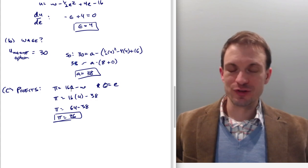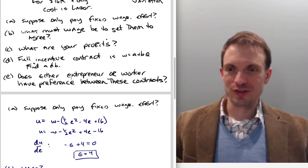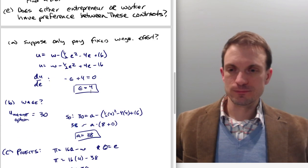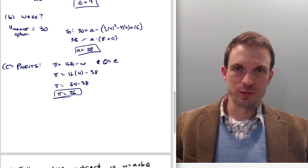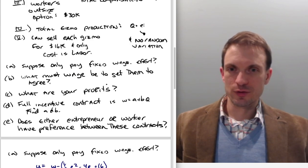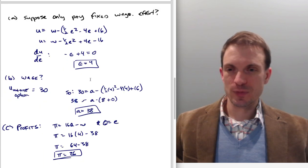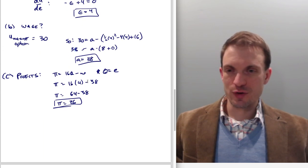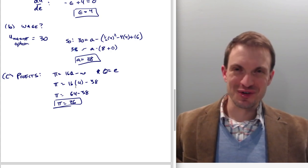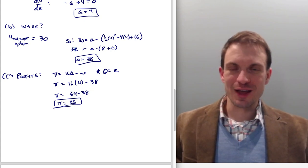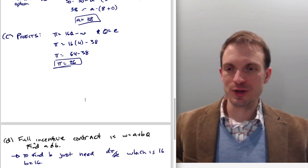Okay, so what about our profits? Well, we said we could sell each gizmo for 16. We're going to get 4 gizmos because there's a one-to-one relationship between gizmos and effort. I told this right here, Q = E. We're assuming no random shock, no random variation in the model. 16 times 4 is 64 minus 38 is 26. So our profits is going to be 26.